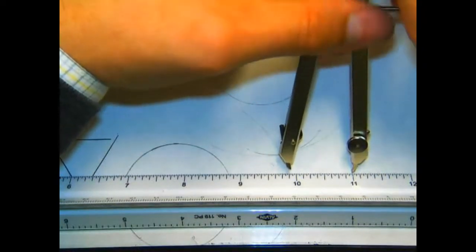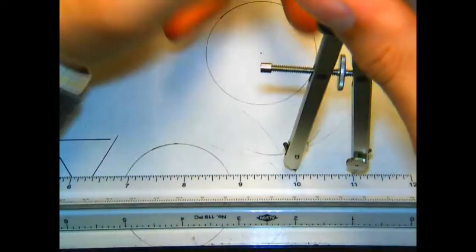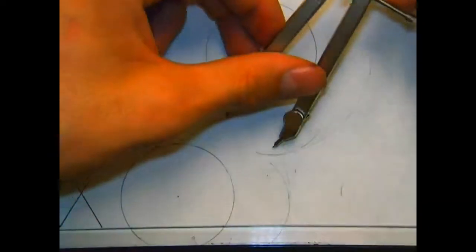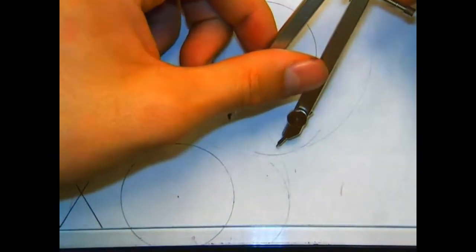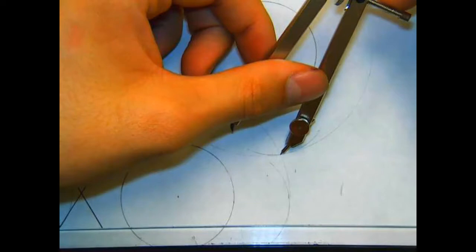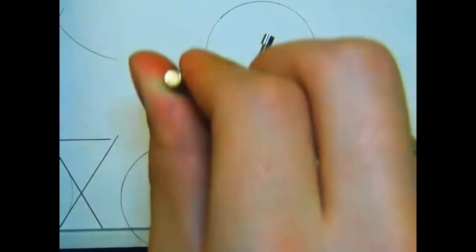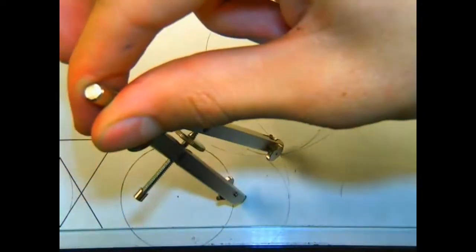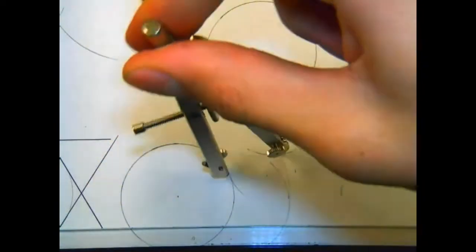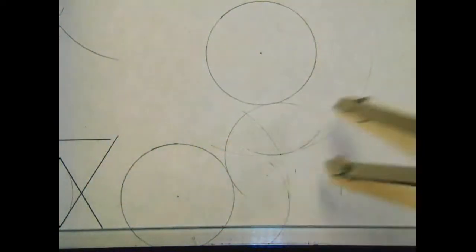So we set our compass back to the desired radius because we did have to change it for drawing tangent arcs to those high points. We put our compass center point on the intersection of the two high point arcs and then swing our arc. There is an arc tangent to two arcs.